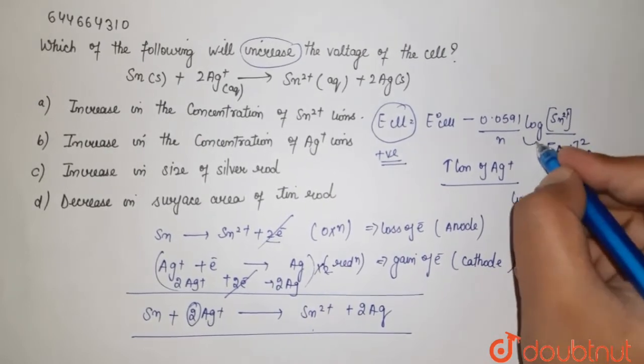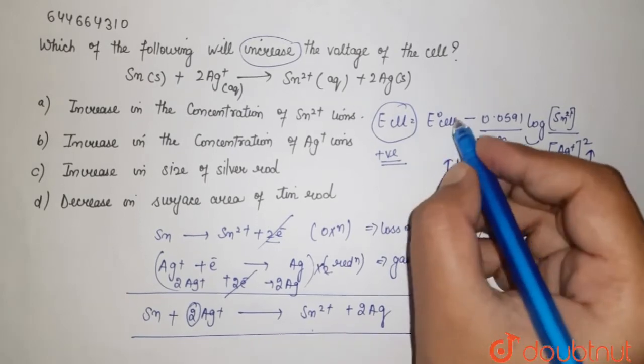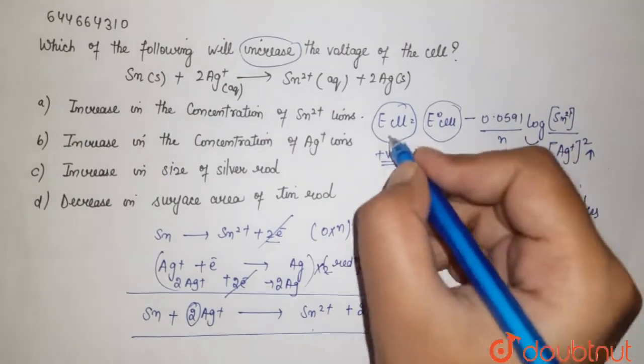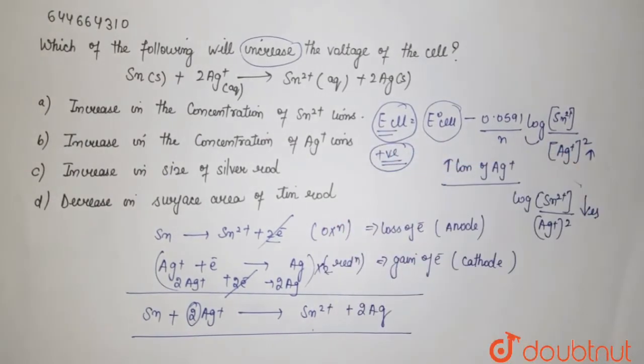If this value increases then this whole value decreases. It means that from E naught cell we have to subtract a little value which means this will come as a positive and an increased value.